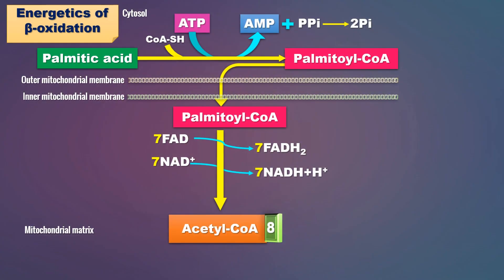I am going to explain the energetics of beta oxidation by taking a specific example — palmitic acid. As we know, palmitic acid is a saturated, long-chain fatty acid consisting of 16 carbon atoms. Here I have shown an overview of the beta oxidation pathway, where activation takes place in the cytoplasm, then it enters the mitochondrial matrix through the carnitine cytotransport system, and the proper beta oxidation pathway takes place in the mitochondrial matrix.